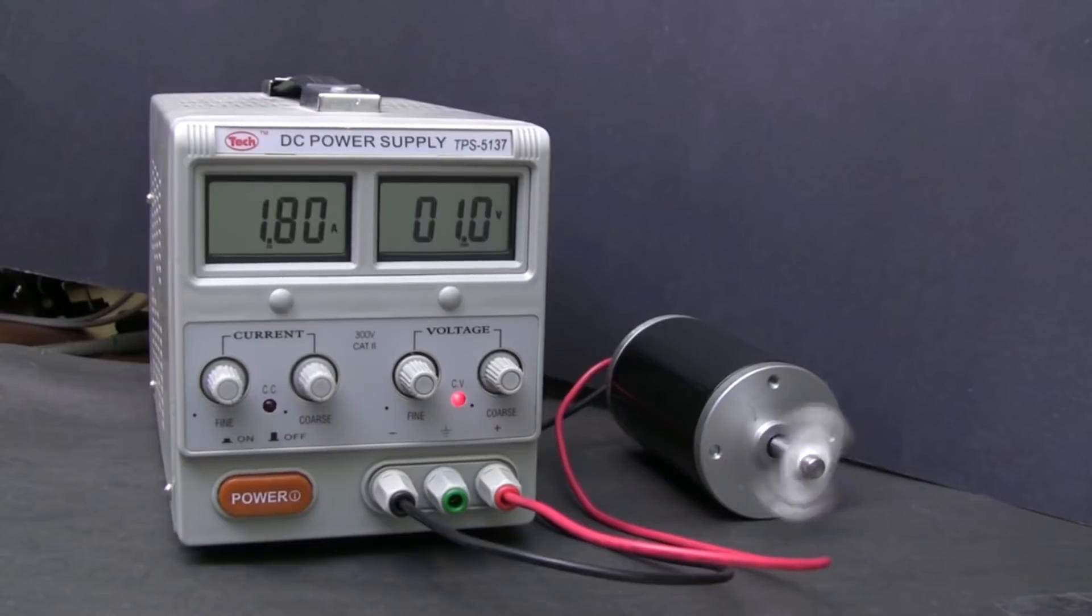Now let's set the power supply to produce 1 volt. Immediately you can see that there's current flowing, roughly 1.8 amps. And when there's current flowing, energy can flow from the power supply to the motor.